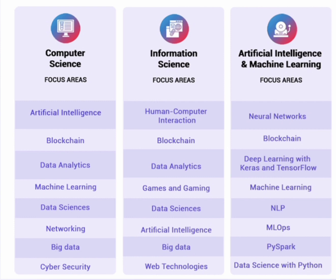Machine learning is the fourth common area — it is in computer science and also in the AI and ML branch. However, machine learning is missing from information science because it is not the focus area there. Similarly, data science is common between computer science and information science, and it also appears in the AIML branch, making the fifth subject area also shared.